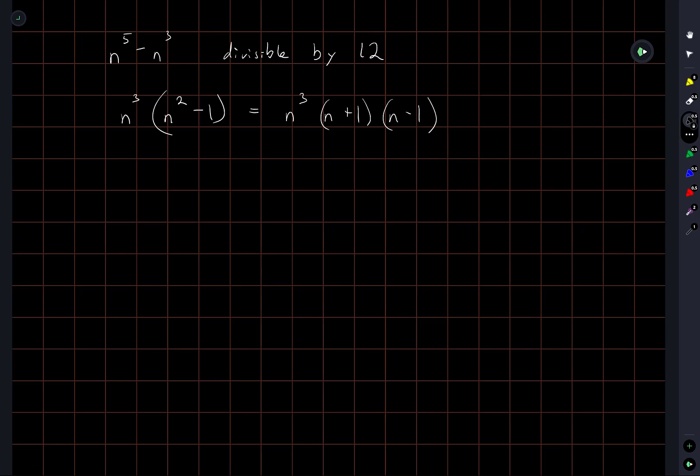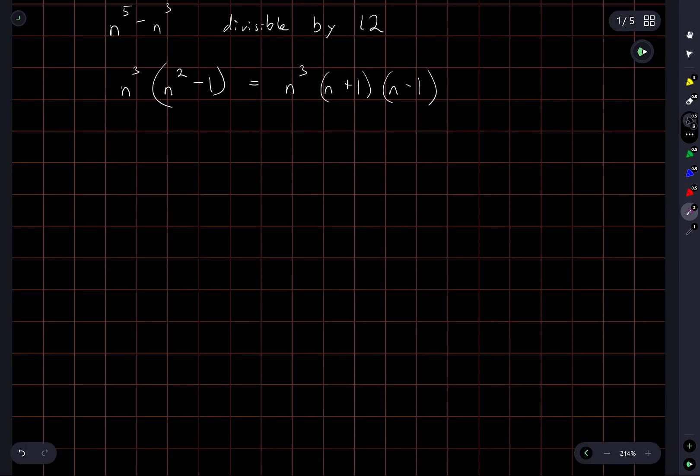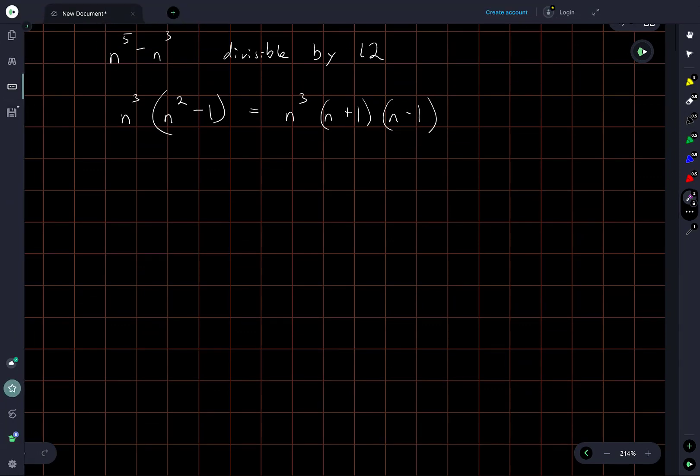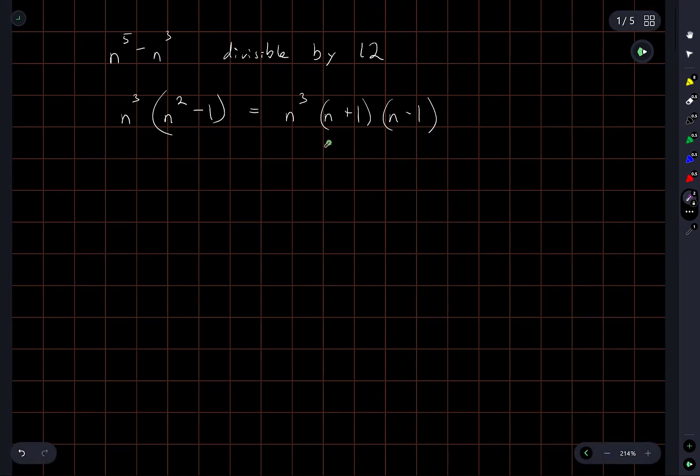I need to show this is divisible by 12, okay. So the first thing I see, okay yeah I'm putting this all together now. So what I have here, I have this number, whatever number this is, I have it factored into a product of three consecutive numbers: n minus 1, n, and n plus 1, but the factor of n actually comes with two additional copies of itself.